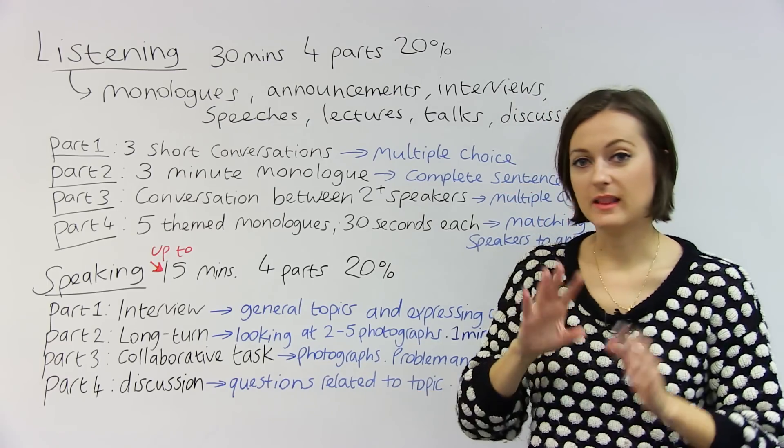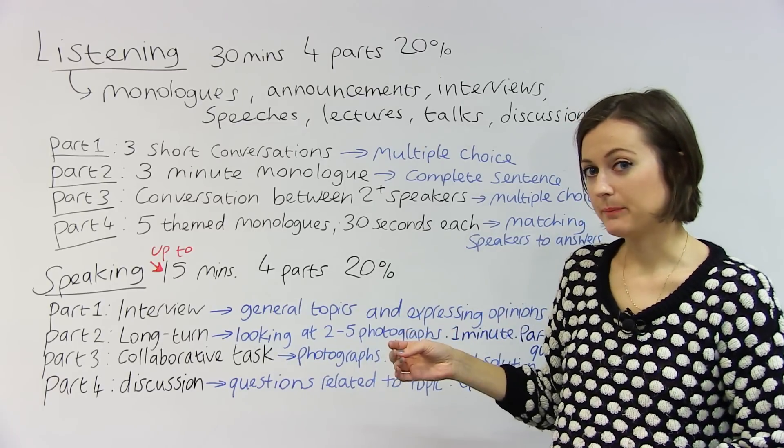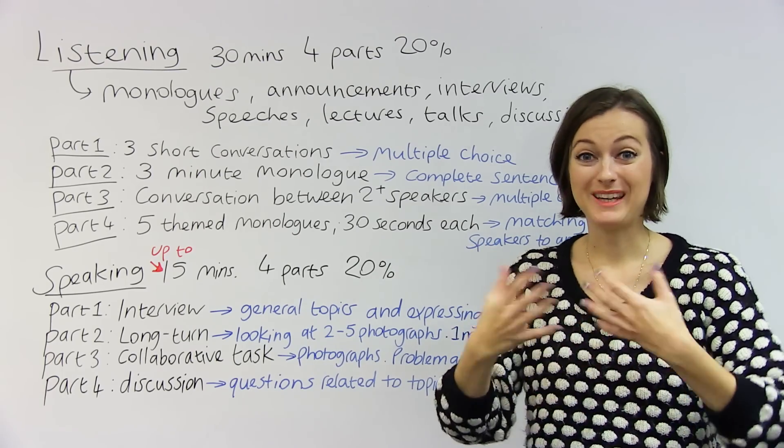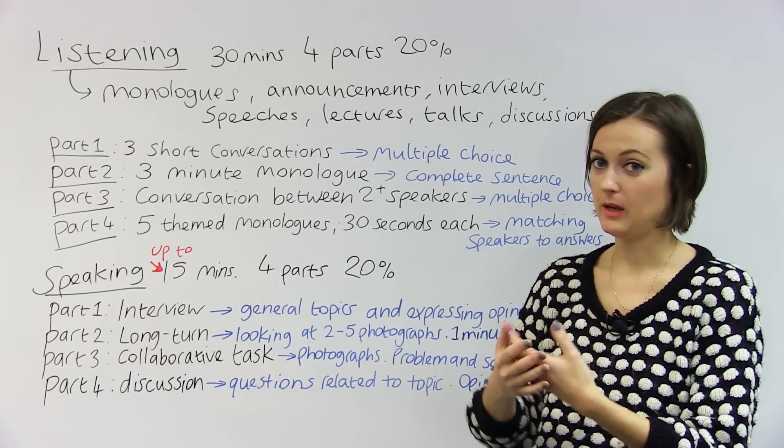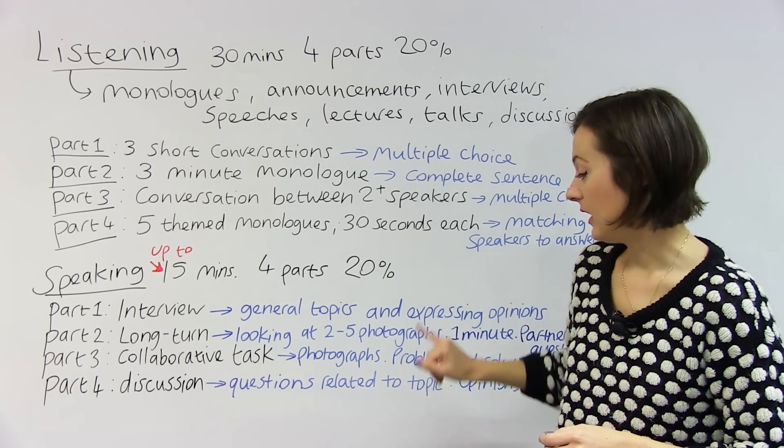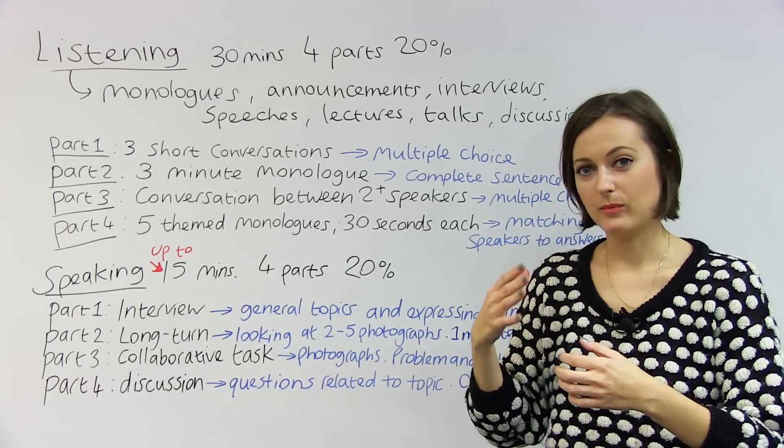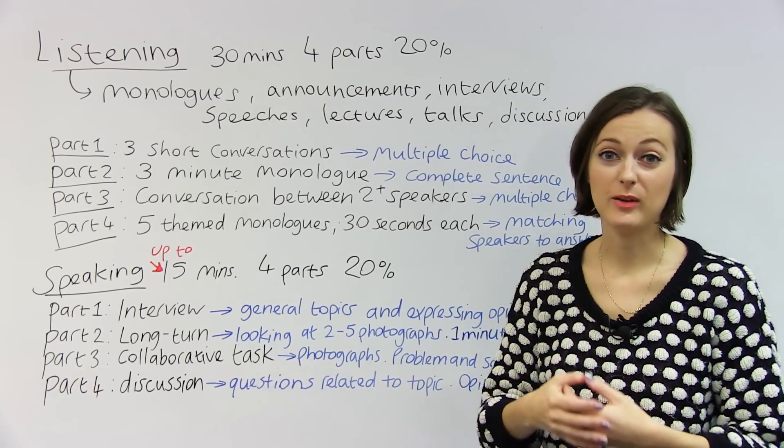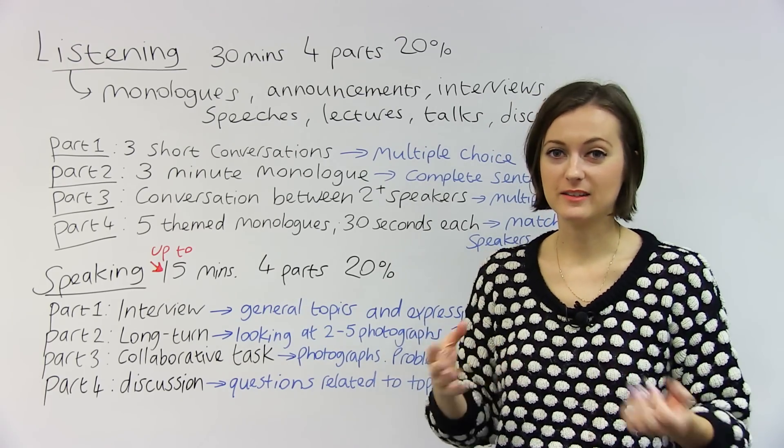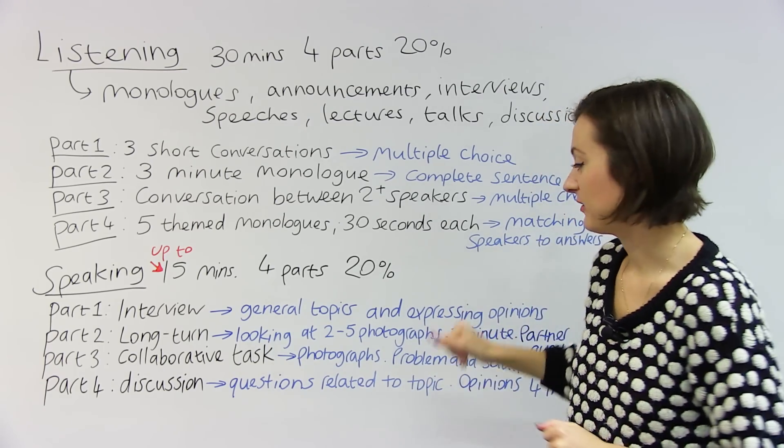Part three of the speaking test is the collaborative task. You and your partner do this part of the test together because the exam is looking at your ability to not just speak English, but your ability as a communicator in English, someone who can ask questions to other people and receive information. So someone who can exchange and interact with other speakers as well. Again, you get some photographs, and here, you need to speak to your partner and propose a solution to a problem. So you have to have a little talk, and at the end, you need to compromise or reach a decision together. That's the whole point of this part of the speaking test.